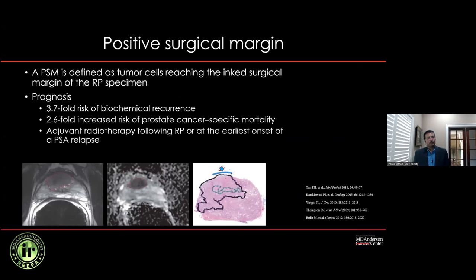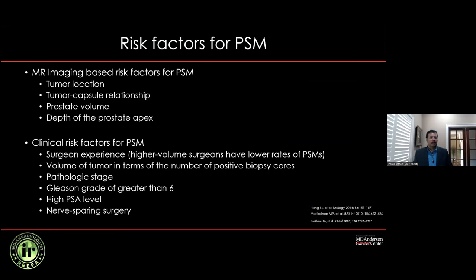A positive surgical margin is when tumor exists at the inked margin of the prostatectomy specimen — pathologists ink both sides of the specimen to identify the resection site, and if tumor touches or is beyond the inked margin, it is a positive surgical margin. Risk factors for positive surgical margin include tumor location, its relationship to the prostate, prostate volume, depth of the gland in the pelvis — as a deep pelvis makes dissection difficult — along with surgeon's experience, tumor volume, pathological stage, Gleason grade, and PSA levels.